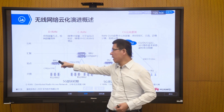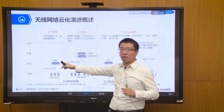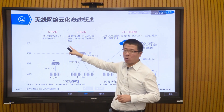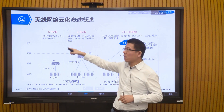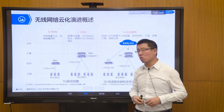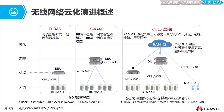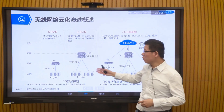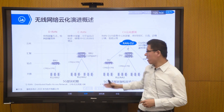The problem with this architecture is that each site's BBU is independent. If they want to collaborate, it can only be done through the transmission network or bearer network to achieve interconnection. But through these networks, when interconnecting and collaborating, there are still some limitations — for example, it's hard to control the delay. Achieving low delay is challenging.